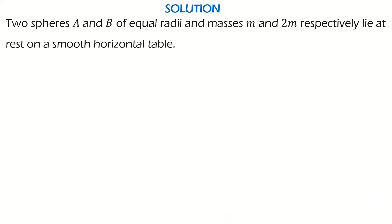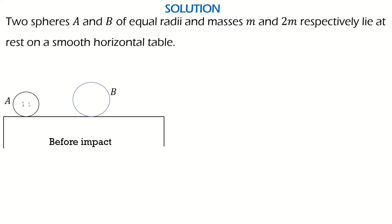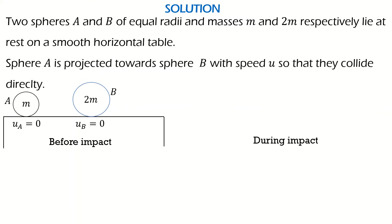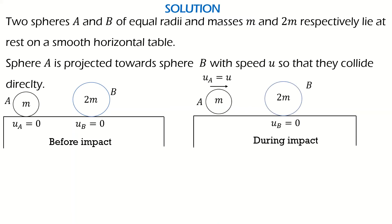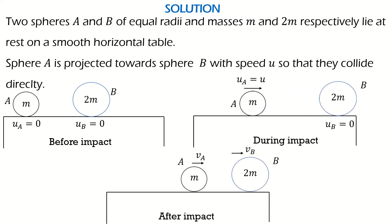Let's get the solution. We have two spheres A and B with equal radii and masses M and 2M respectively, lying on a smooth horizontal table at rest. Before impact, we draw our horizontal table with sphere A and sphere B. The mass of sphere A is M and that of sphere B is 2M, and their initial velocities are zero. During impact, sphere A is projected towards sphere B with speed U so that they collide directly. After impact, both spheres acquire their final velocities.